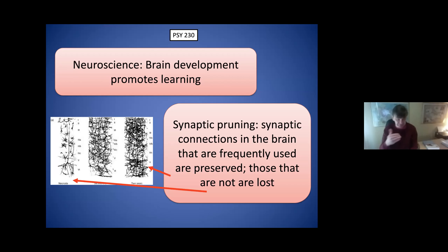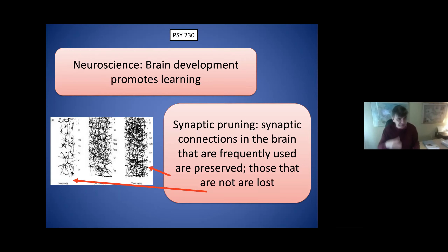Before that, I must emphasize the importance of biological factors. Neuroscience tells us that brain development promotes learning. If we develop certain mental and physical activities in a child, it corresponds with engagement of particular brain pathways — and so they develop and are preserved. This is the concept of synaptic pruning: synaptic connections in the brain that are frequently used are preserved, and those that are not are lost.